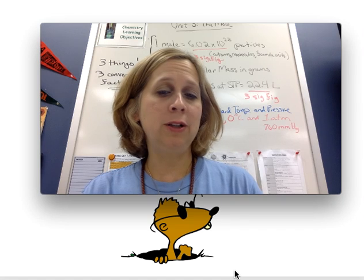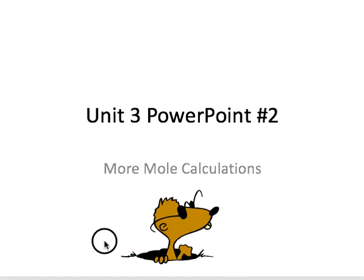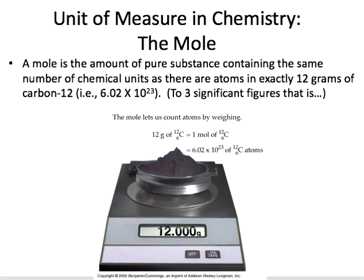In the last lecture we talked a little bit about this unit called the mole. The mole is actually just a number. It's a convenient number like a dozen for counting really small things. Its definition is the amount of pure substance containing the same number of chemical units as there are atoms in exactly 12 grams of carbon-12. You should circle the word carbon in your notes — it's based on carbon.